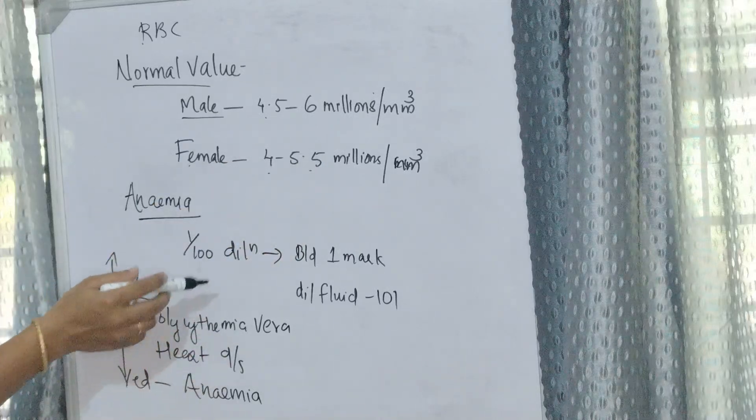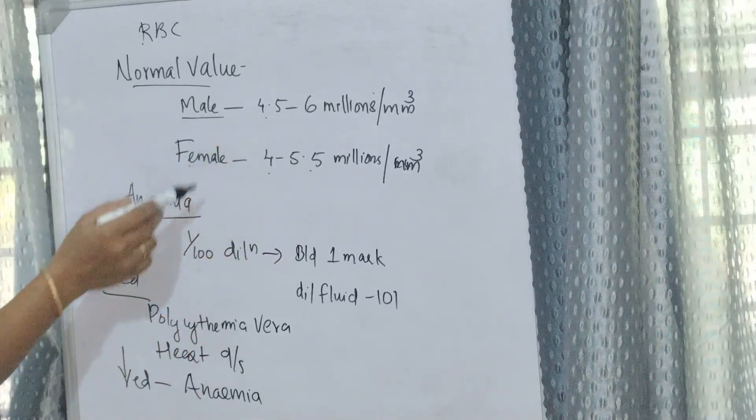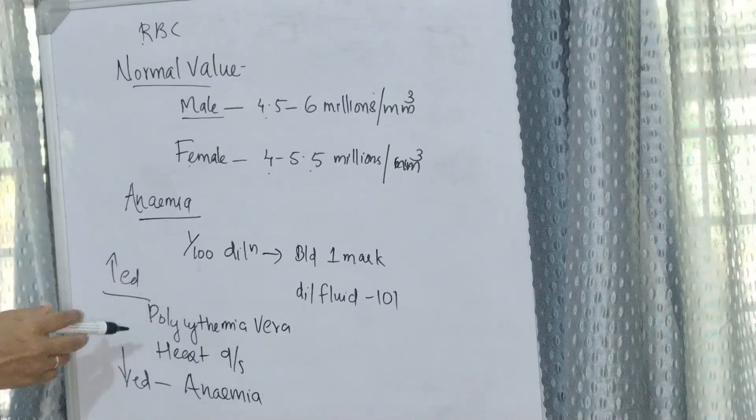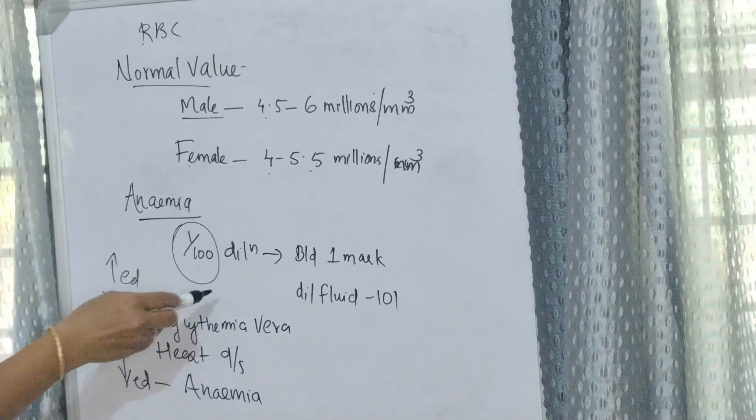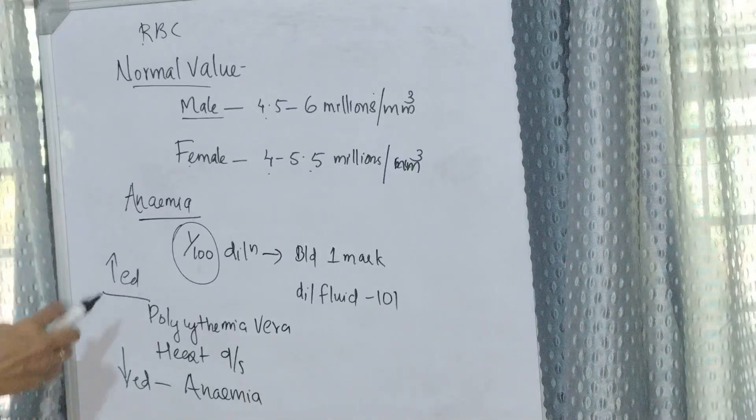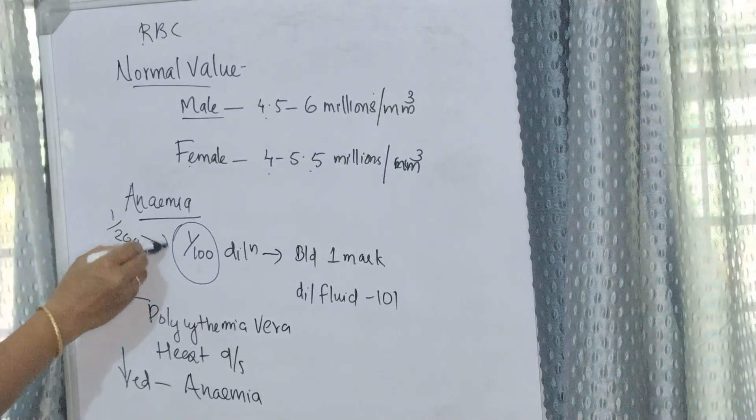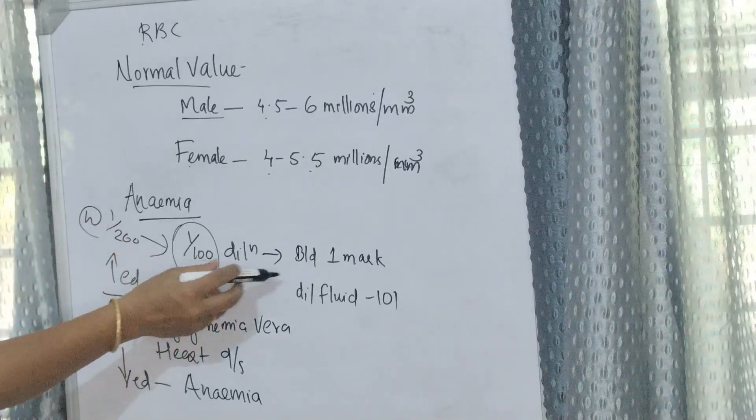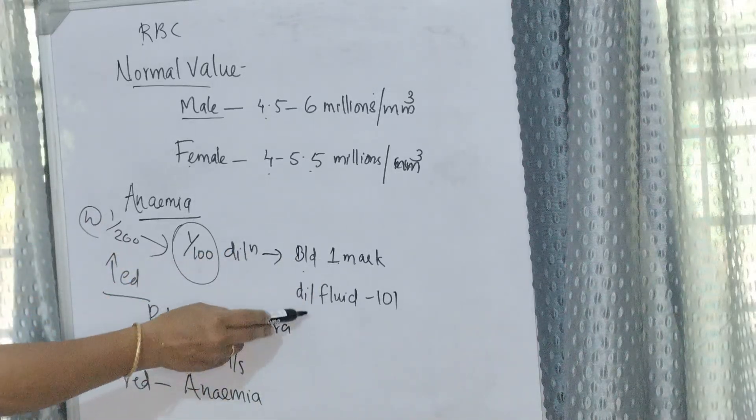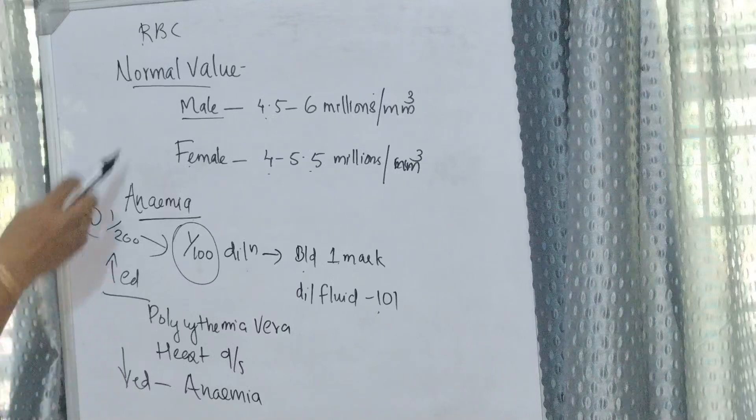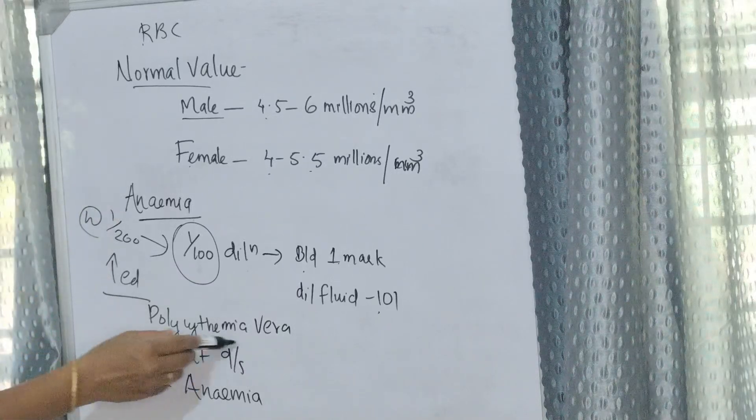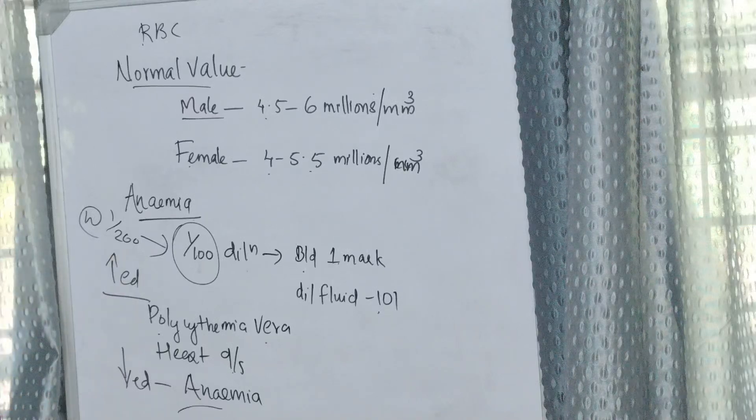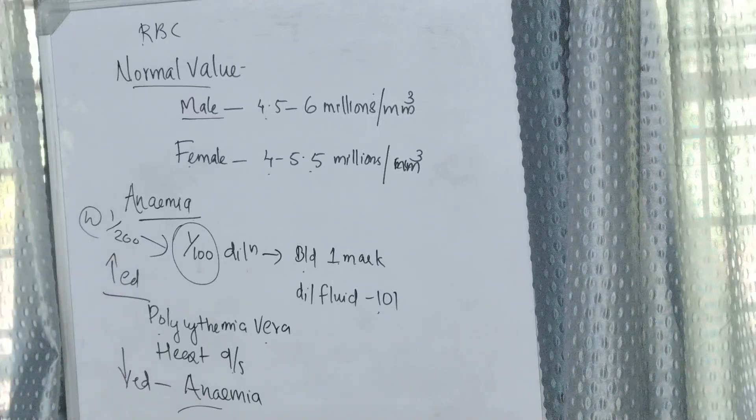The normal value for females will be less than that of males. If the patient is anemic, the dilution is reduced to 1 in 100. Normally we use 1 in 200 dilution. For anemic patients, we dilute the blood 1 in 100, meaning blood up to 1 mark and diluting fluid up to 101 mark.